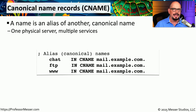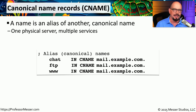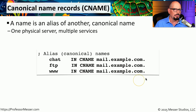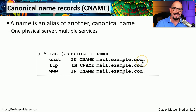There may be times when a particular server is referenced using different names. For example, one server might be used as a web server, a DNS server, an NTP server, and a mail server. Instead of referencing it with a single name, we can use different names to associate different resources. These are called canonical names, or CNames. If you have a server called mail.example.com, you might also want CNames for chat, FTP, and WWW — so chat.example.com, ftp.example.com, and www.example.com all communicate to a single server called mail.example.com. To change the IP address, you simply update the A record for mail.example.com and all canonical records stay the same.